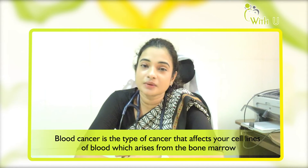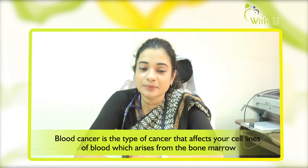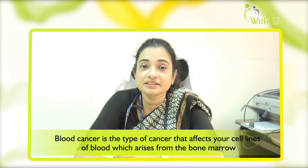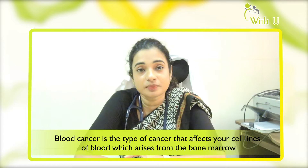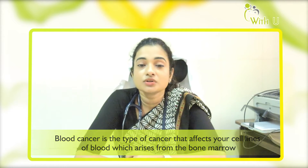So what is blood cancer? Blood cancer is a type of cancer that affects cell lines of blood which arises from the bone marrow. Bone marrow is the part from where all types of blood cells arise. The white blood cells, the red blood cells, and the platelets all arise from a common progenitor or common mother cell called the stem cells.